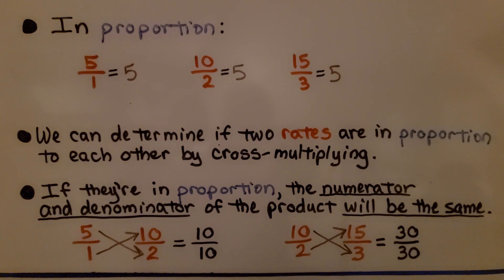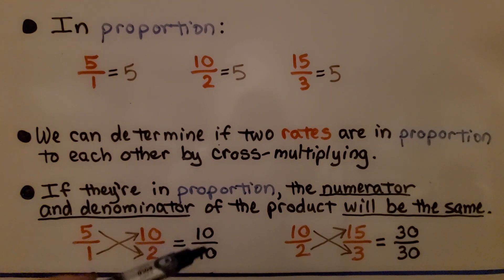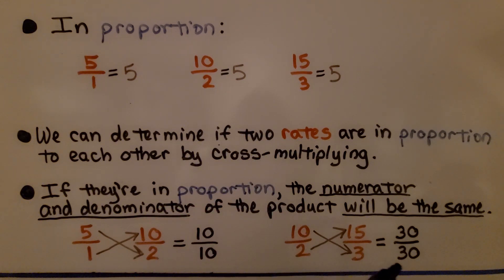We can determine if two rates are in proportion to each other by cross-multiplying. If they're in proportion, the numerator and denominator of the product will be the same. We cross-multiply. We do 5 times 2 and 1 times 10. One times 10 is 10, and 5 times 2 is 10. We get the same numerator and denominator. We know they're in proportion to each other. And with 10 halves and 15 thirds, we can do 10 times 3, which is 30, and 2 times 15, which is 30. We have the same numerator and denominator. These two are in proportion to each other.